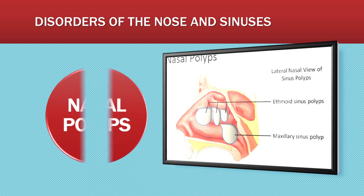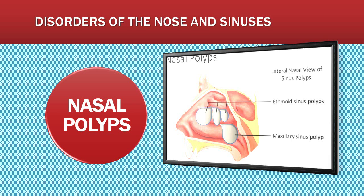Let's take a brief moment to talk about nasal polyps. Nasal polyps are benign grape-like clusters of mucous membrane and connective tissue, which are often found bilaterally in the nose. Polyps are caused by irritation to the nasal mucosa and can result from irritation in the sinuses from allergies or infection.